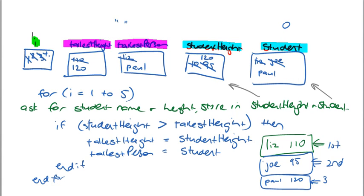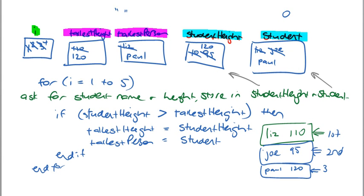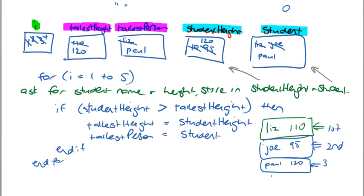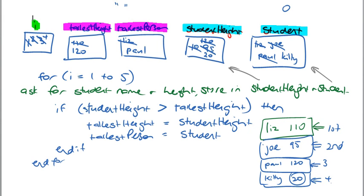I'm coming through for the fourth time. This fourth time we'll use the data of Kitty — that's my cat — and Kitty's not very tall, she's 20 centimetres. Changed it to four. So over here, Kitty's name will replace Paul in student, and the height will be 20. Now, is the student height currently greater than the tallest height? The student height is 20 and the tallest height is 120. So this is not true. I jump through after the if statement and finish with the loop.